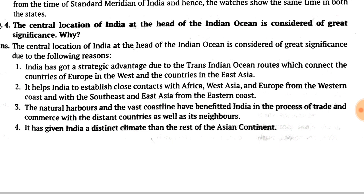A fourth point is that India's central location has given it a distinct climate compared to the rest of the Asian continent. The Himalayas provide cold weather, while the coastline keeps temperatures moderate. Other countries like those in West Asia and Saudi Arabia face desert conditions, but India enjoys a moderate and distinct climate, which is another significance of its central location. These are the questions and answers for this chapter.